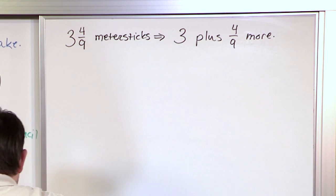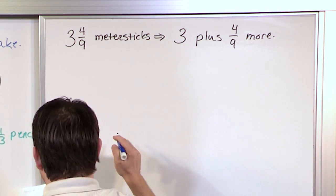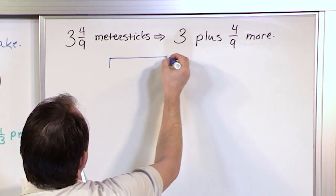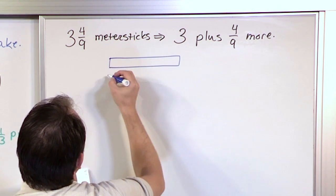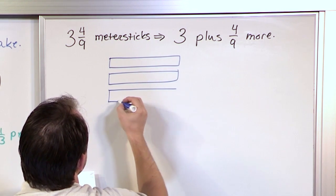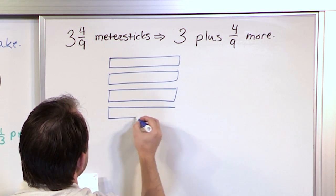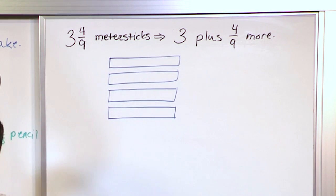Three plus four ninths more. So if I wanted to draw this, then I would have to say, all right, here is meter stick number one. Here's meter stick number two. Here's meter stick number three. And I know I'm going to need part of another one because I have a fraction hanging out there.